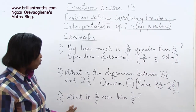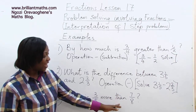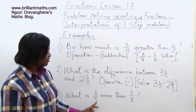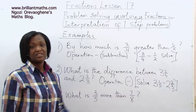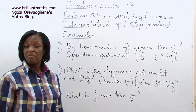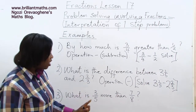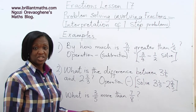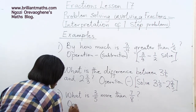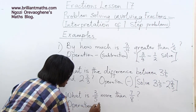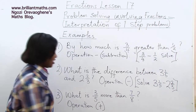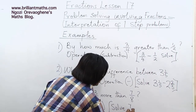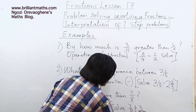Question three: What is three-fifths more than seven-eighths? We're supposed to find a fraction that is more than seven-eighths by three-fifths. So the operation is addition. Pause the video and solve seven-eighths plus three-fifths.